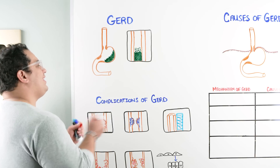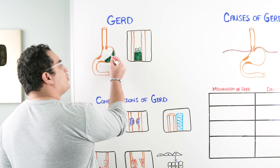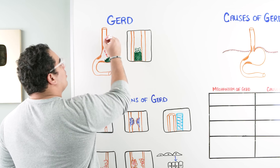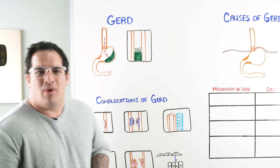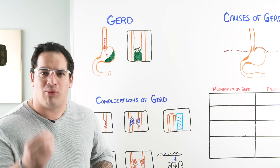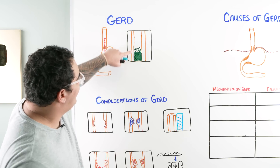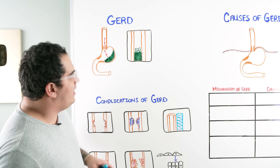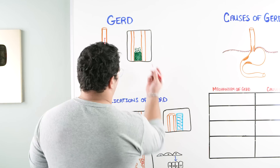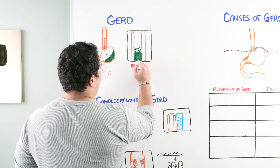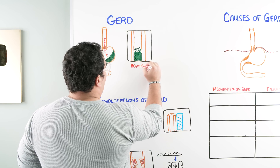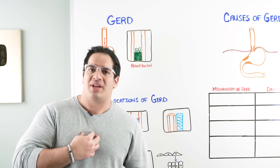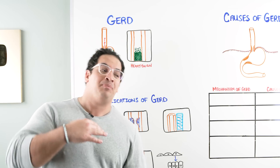GERD is this basic concept where nasty stuff like hydrochloric acid contents from the stomach will move its way upwards into the esophagus. When that happens, the acid within the esophagus can cause a lot of problems. One of these is heartburn, which manifests as a burning retrosternal chest pain that usually occurs after meals and is really bad when you lay supine.